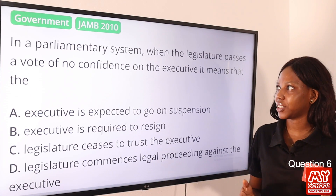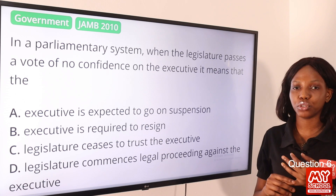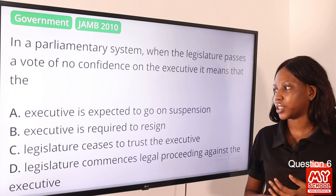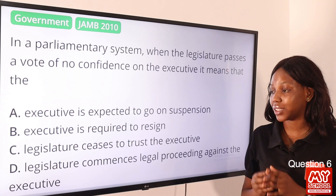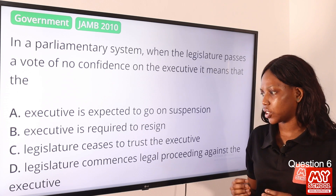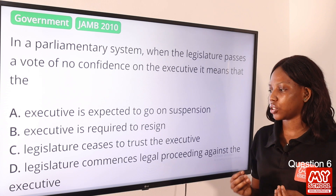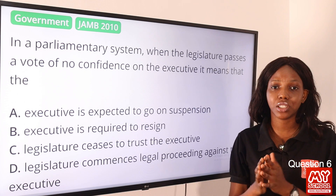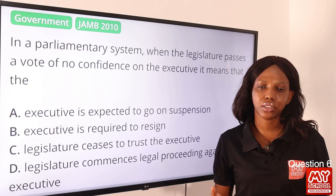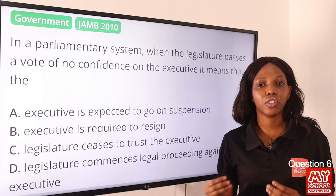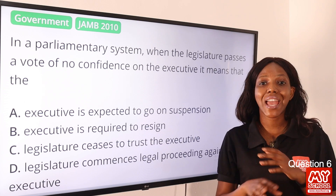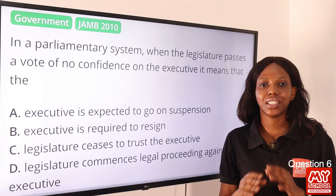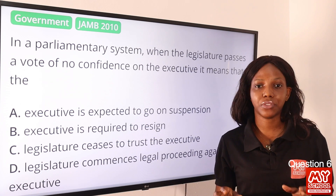Question 6: In a parliamentary system, when the legislature passes a vote of no confidence on the executive, it means that the — option A, executive is expected to go on suspension; option B, executive is required to resign; option C, legislature ceases to trust the executive; option D, legislature commences legal proceedings against the executive. The answer is option B, executive is required to resign. One of the demerits of the parliamentary system is that the executive can be removed any time a vote of no confidence is passed.